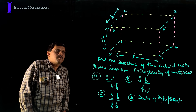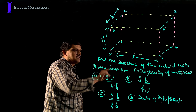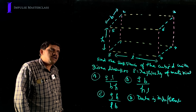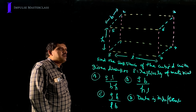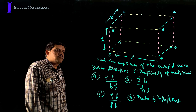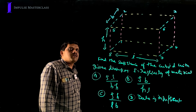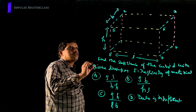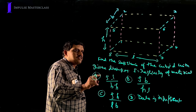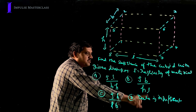Now let us come back to the original question: find the resistance of the cuboid with given dimensions. According to the points where the potential difference is applied, the answer may be A, B, or C. Since nothing was mentioned about where the potential difference is applied, the question is incomplete. Therefore, the answer is data insufficient.